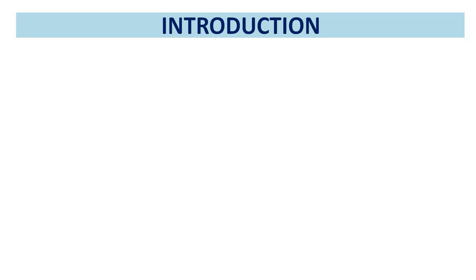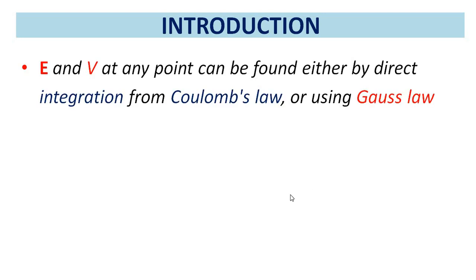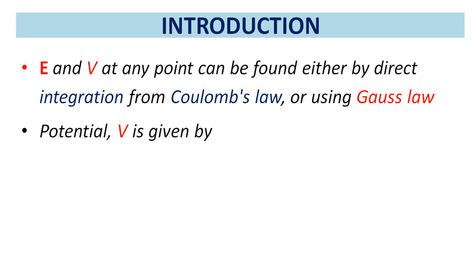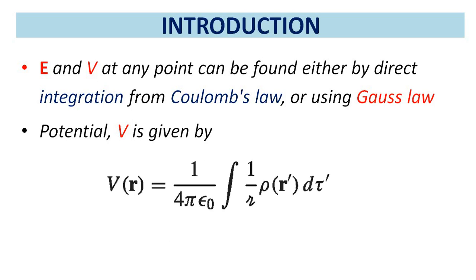The primary aim of electrostatics is to find the electric field of a given stationary charge distribution. E and V at any point can be found either by direct integration from Coulomb's law or using Gauss's law. The potential V is given by V = 1/(4πε₀) integral (1/R) ρ dτ.